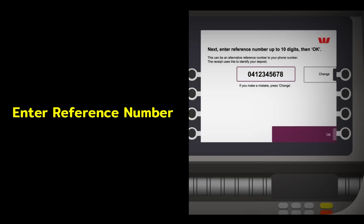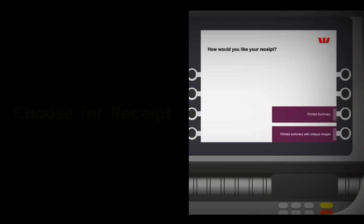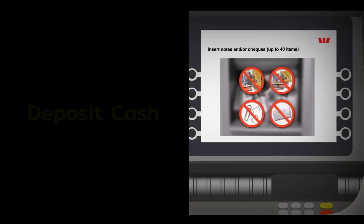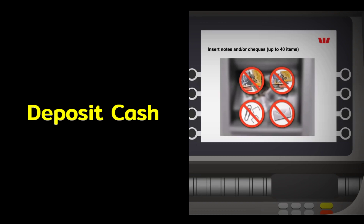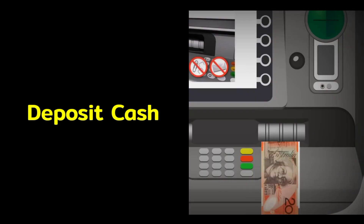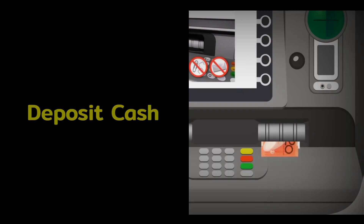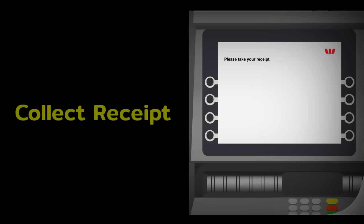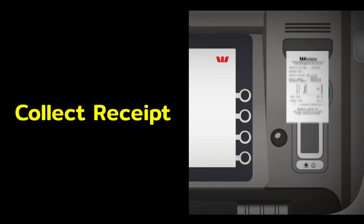To select a different reference number, tap Change and enter it. Choose accordingly for the receipt. Deposit cash through the deposit window, then review the displayed amount and confirm the deposit. Collect your receipt and you're done.